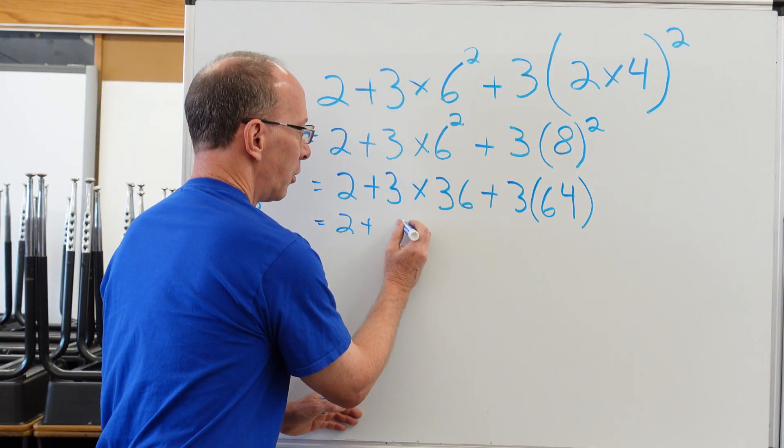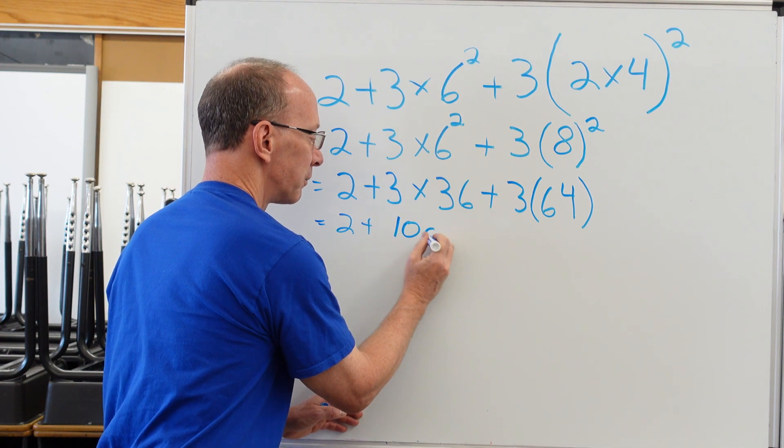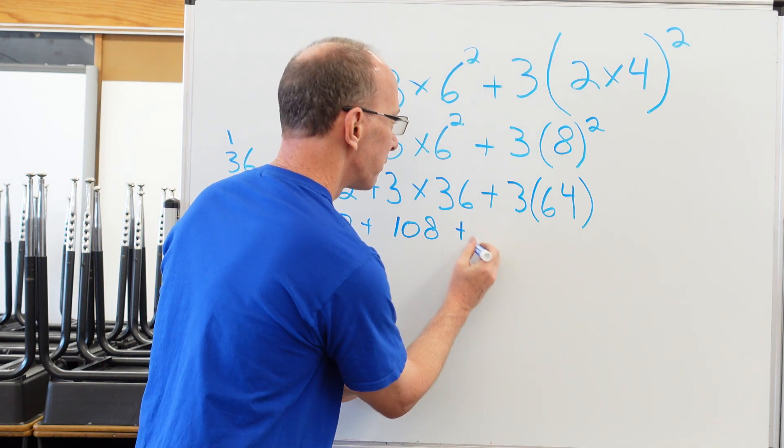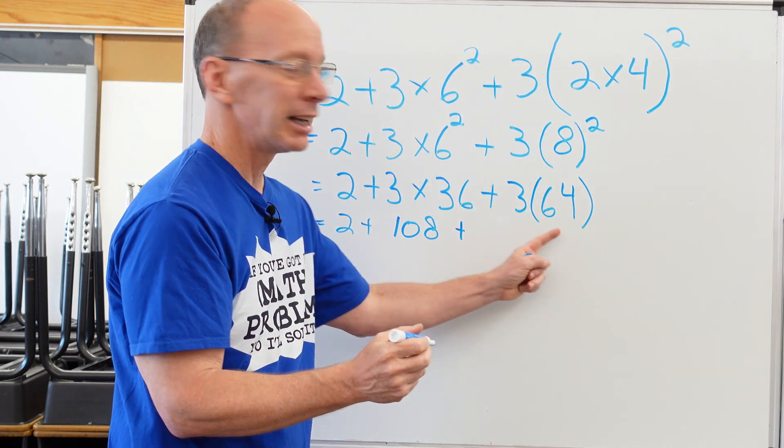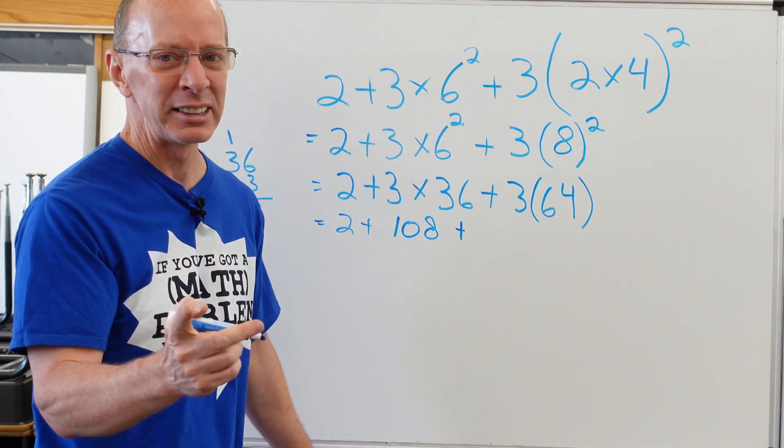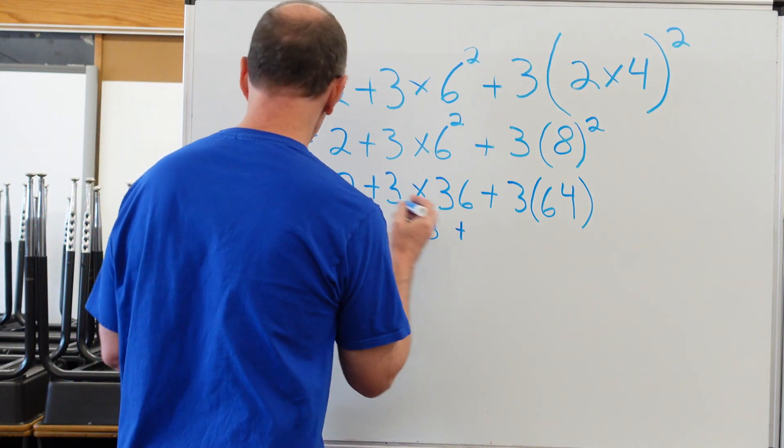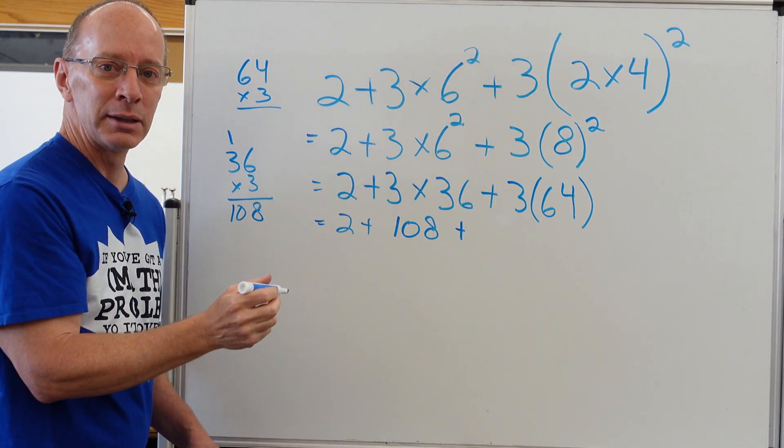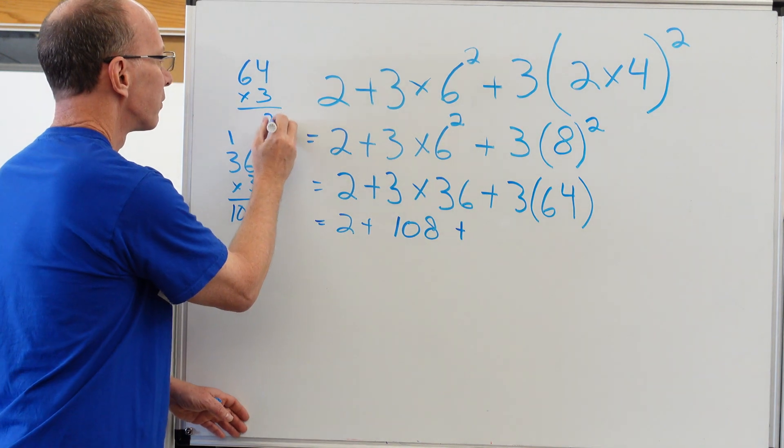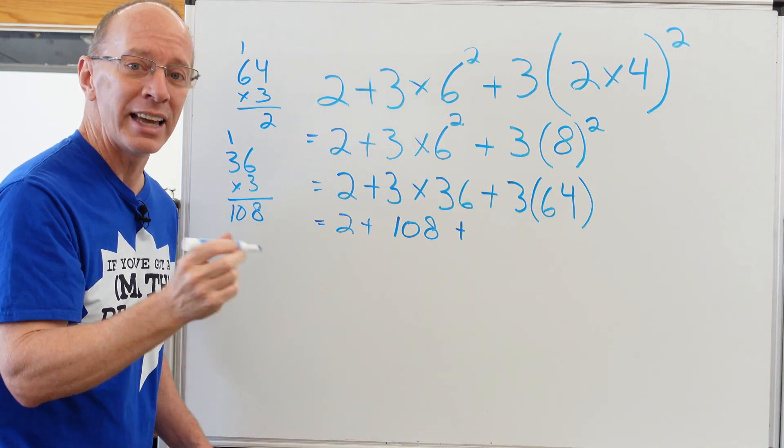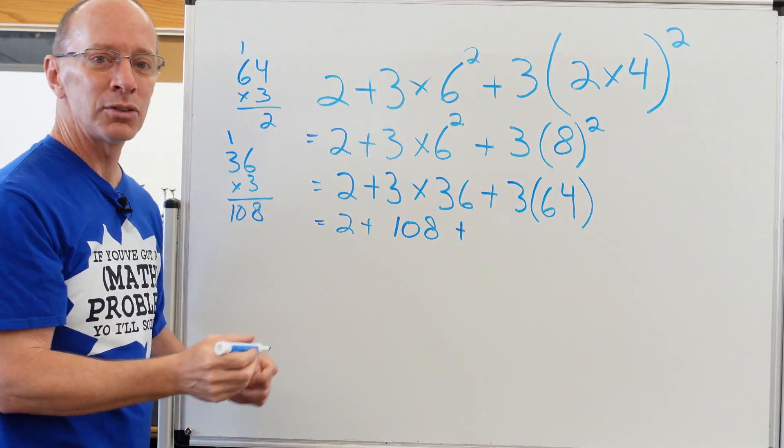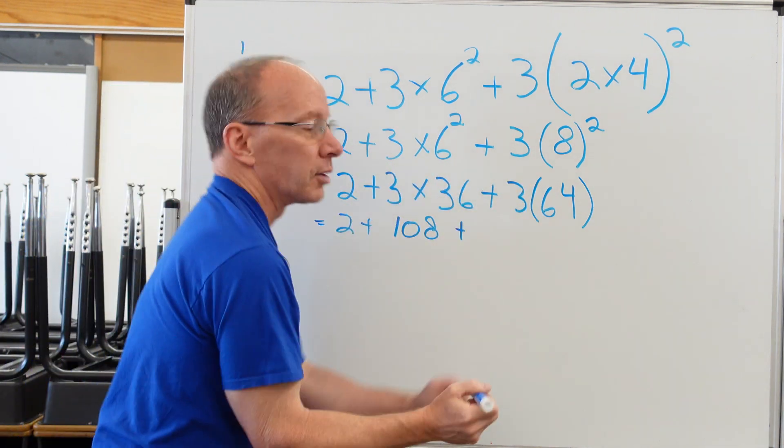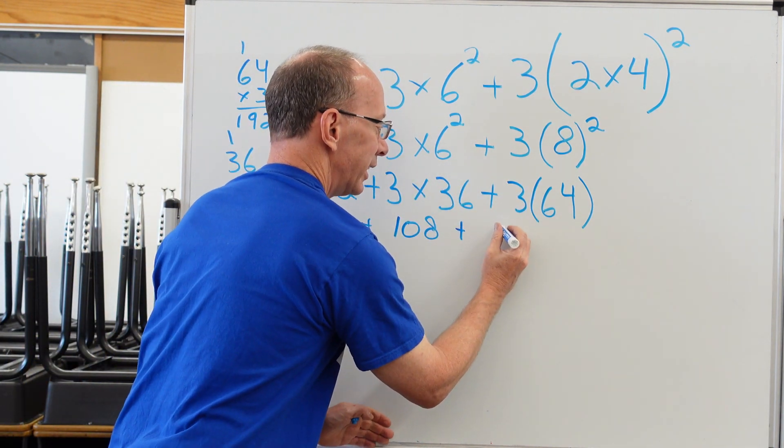Go over here: plus 108, and then we keep moving. Plus 3 × 64. I didn't learn my 64s, so I need to do a little figuring. 64 times 3: four times three is 12, put the one up here, six times three is 18 plus the one is 19. So that's 192.